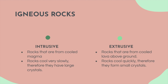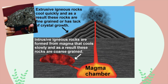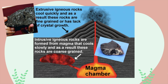Intrusive and extrusive — so this is kind of what that looks like. Extrusive igneous rocks cool quickly and as a result, these rocks are fine-grained or have a lack of crystal growth. They look like this. Intrusive igneous rocks are formed from magma that cools slowly and as a result, these rocks are coarse-grained, which looks like this. That's pretty cool.